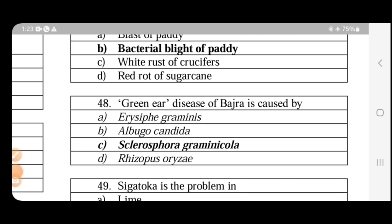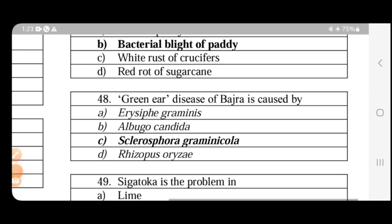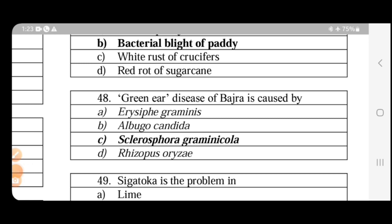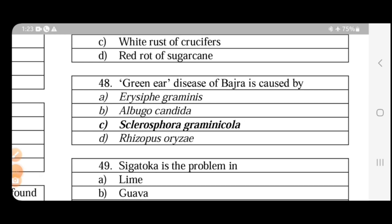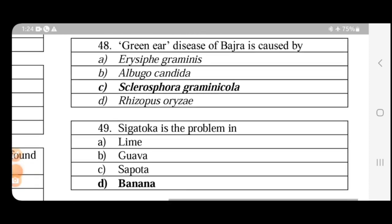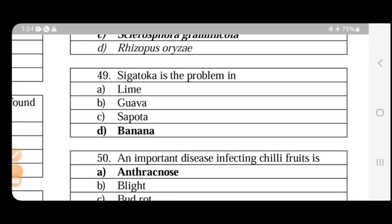Green ear disease of bajra is caused by Sclerospora graminicola. Green ear disease, another name, downy mildew of bajra. This is the most important disease. Disease symptoms: fungus growth appears first on the lower side of the leaves. This is the best weather condition: humid weather. Floral portion becomes leafy.